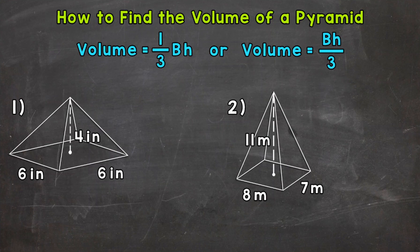When it comes to pyramids, we can use the formula 1 third times the area of the base times the height. So whatever the base is — a rectangle, a square, a triangle, etc. — use the correct formula to find that area and then plug the area of the base into the formula for the volume. You can also use the formula: area of the base times the height and then divide by 3, because multiplying by 1 third is the same as dividing by 3. We'll talk about why we multiply by 1 third or divide by 3 after number 1.